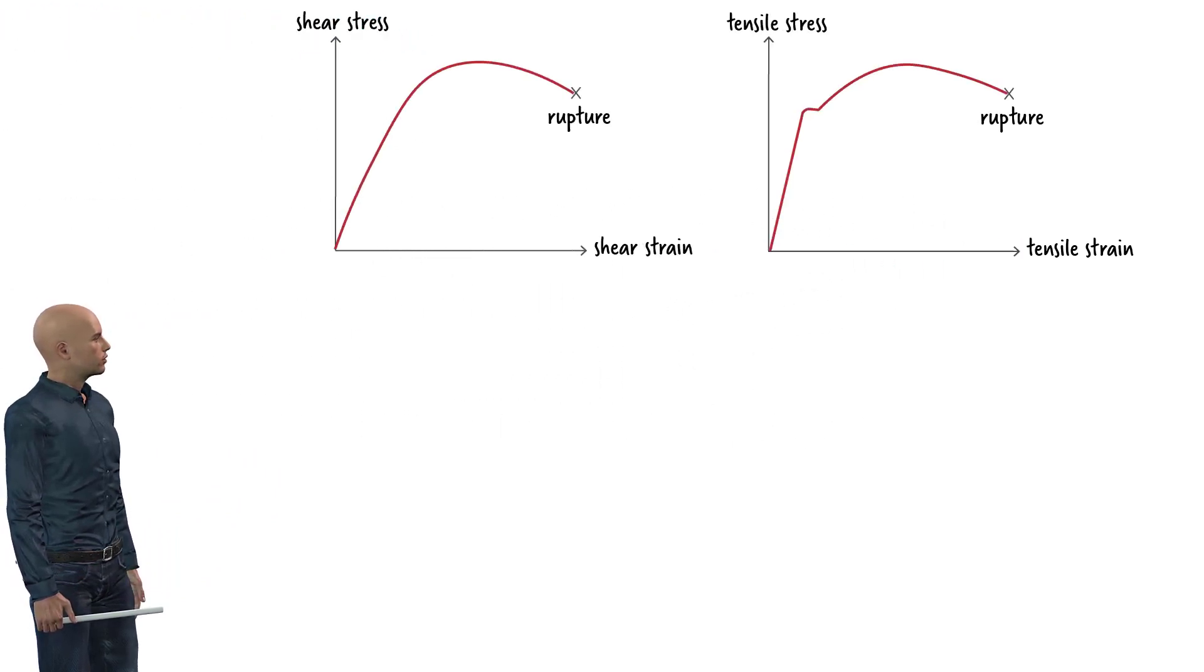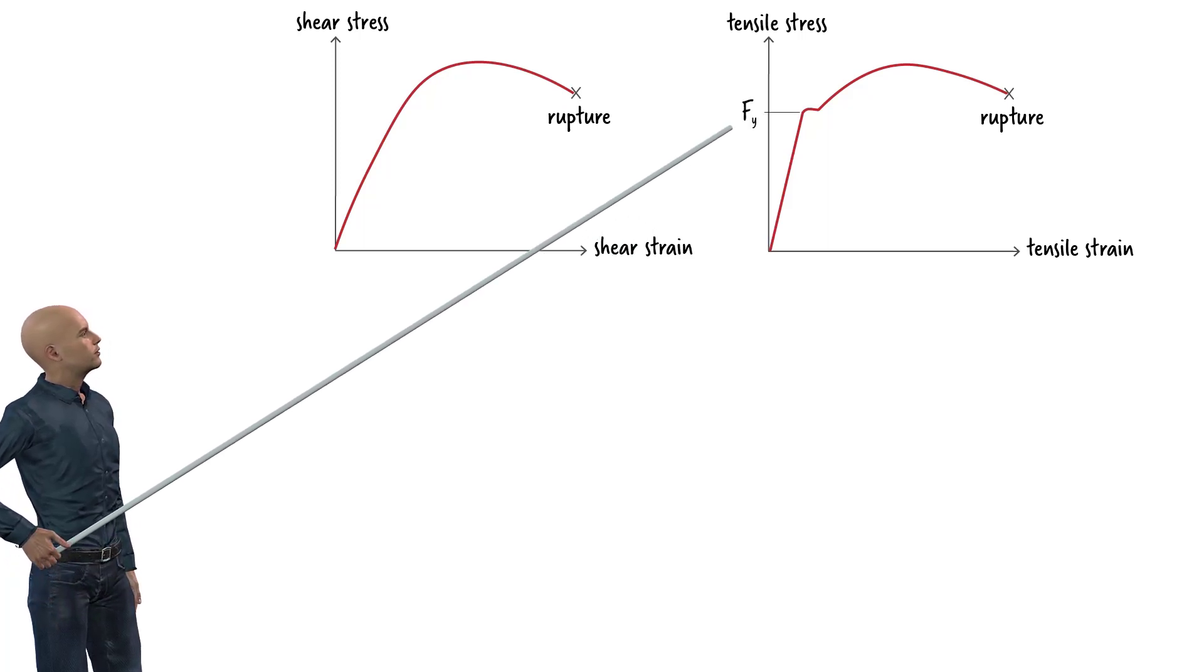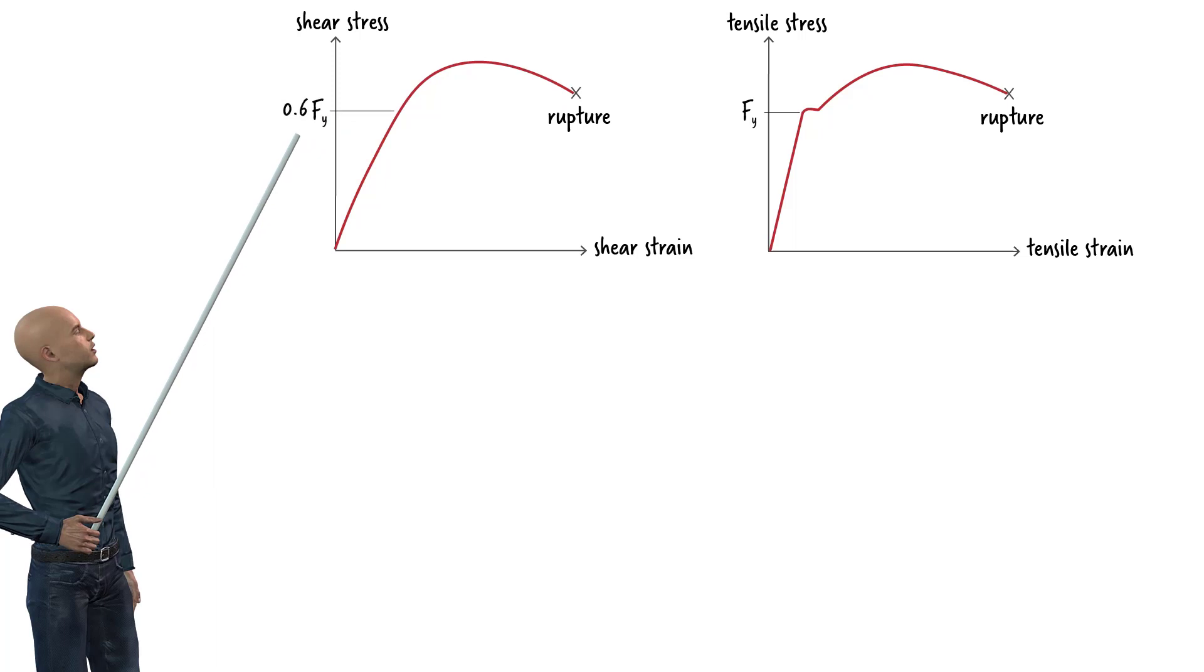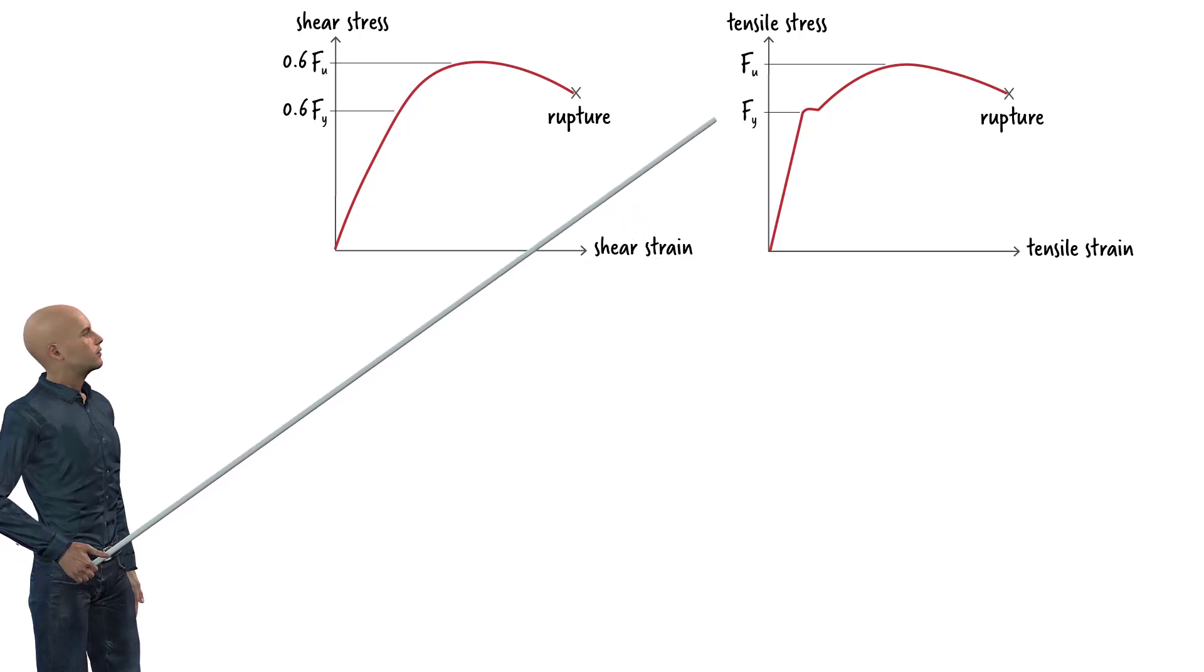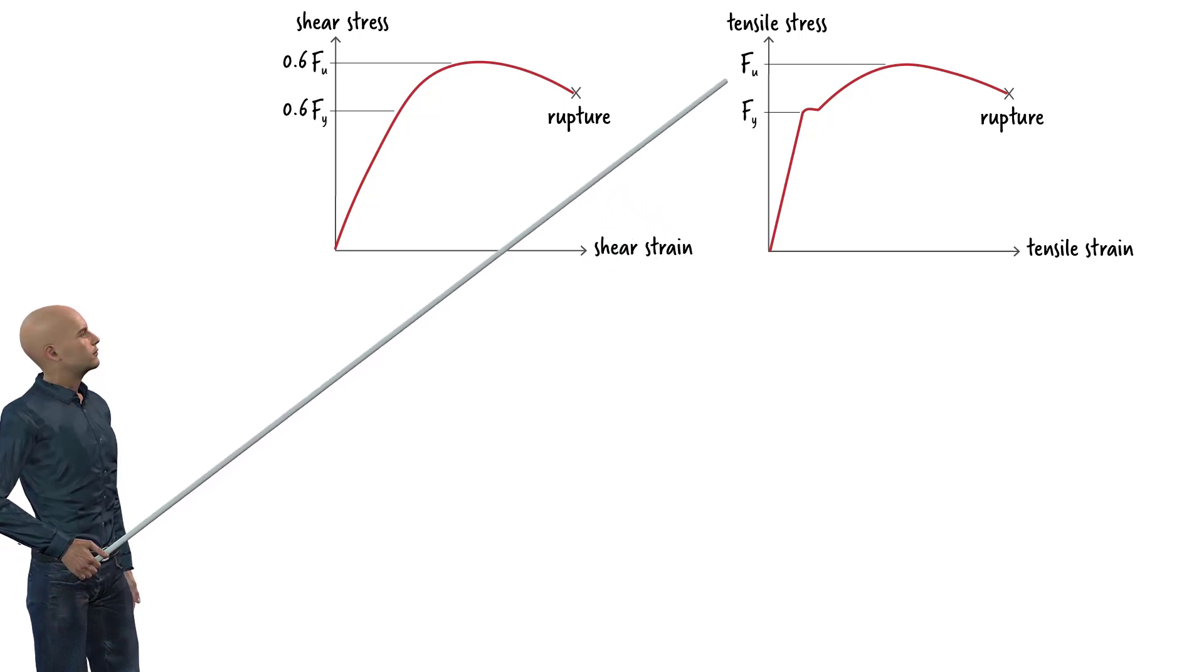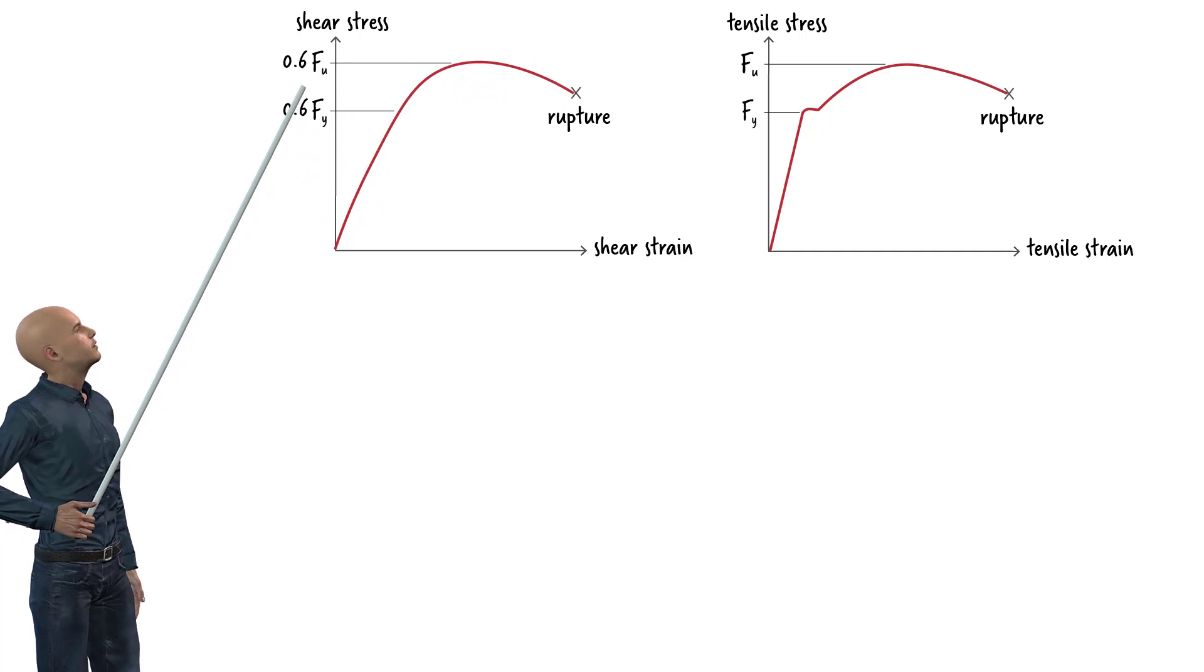Here we have the tension and shear stress strain diagrams for structural steel. If we refer to the tensile yield stress as Fy, the shear yield stress can be expressed as 0.6 Fy. Similarly, if we denote the tensile strength of steel as F sub u, the shear strength can be written as 0.6 F sub u.